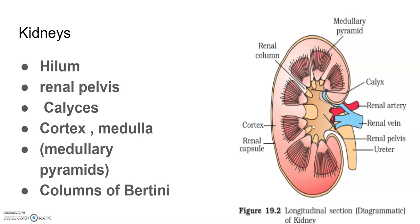Inner to the hilum is a broad funnel-shaped structure or space called the renal pelvis. You can see this part — the renal pelvis with projections called calyces. The singular is calyx and the plural is calyces.